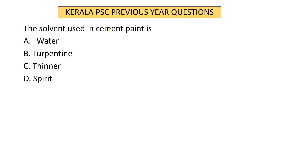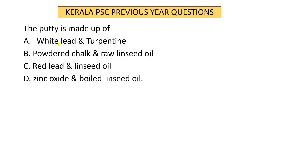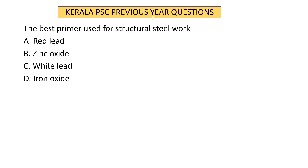Question 4: The solvent used in cement paint is water. Question 5: Putty is made up of — options: white lead and turpentine oil, powdered chalk and raw linseed oil, red lead and linseed oil, or zinc oxide and boiled linseed oil. The answer is option B — powdered chalk and raw linseed oil. Putty is used to fill holes and cracks in walls for a smooth surface before painting.